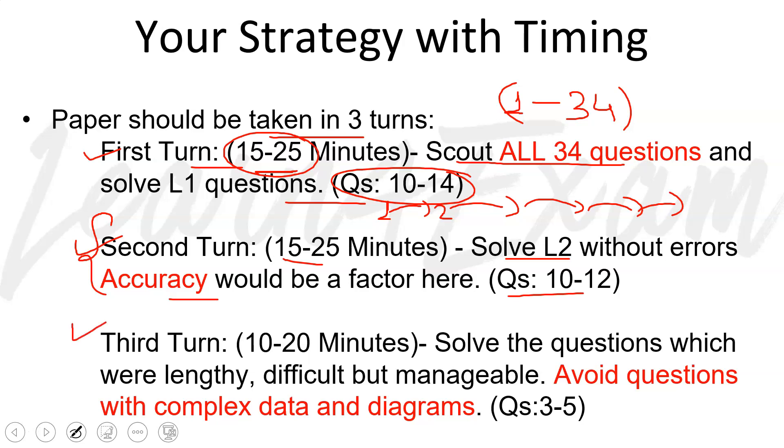Then comes the third turn. In the third turn, the questions that you could not solve in second turn and the difficult questions - you have time, you feel that you've solved all easy questions, now some lengthy and difficult questions remain, you want to solve them. Those questions in this turn. The questions you solve will be lengthy and difficult but they would be manageable. If they're not manageable, how will you solve them? So they'll be manageable but a bit lengthy and difficult. This is my personal opinion: please try to avoid questions with complex data and diagrams because they'll take more time. You have less time, I haven't kept attempts very high either. 3 to 5 attempts in 10 to 20 minutes should be fine for you.